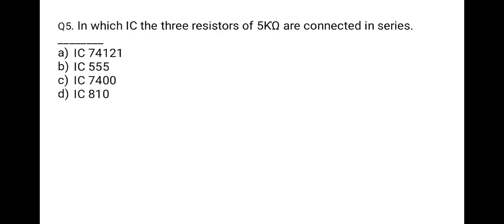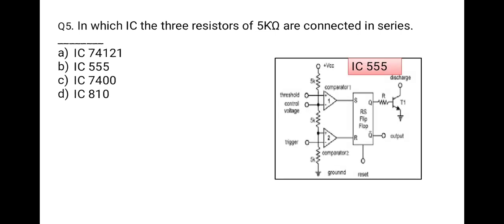The next question: in which IC are three resistors of 5 kΩ connected in series? Options: IC 74121, IC 555, IC 7400, or IC 810. From the circuit diagram of IC 555, there are three 5 kΩ resistors connected in series. So the correct option is B, IC 555.